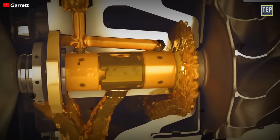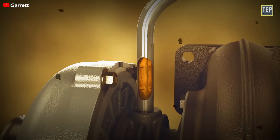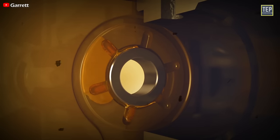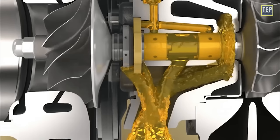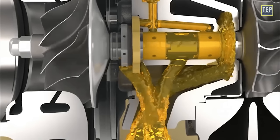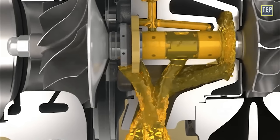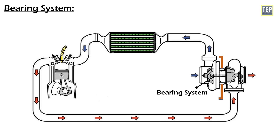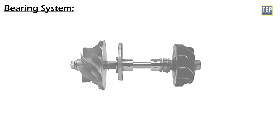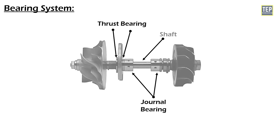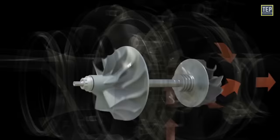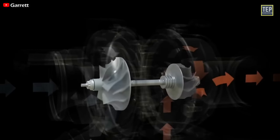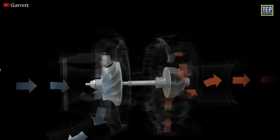The oil supply and drain system connects the turbocharger to the engine's oil supply to provide lubrication and cooling to the bearings and shaft. It also has a drain system to remove oil that has circulated through the turbo. The bearing system is a set of bearings that support the shaft and allow it to rotate smoothly and efficiently, helping to maintain the proper operating conditions for the turbocharger.